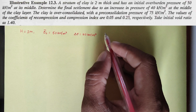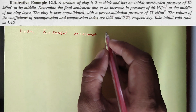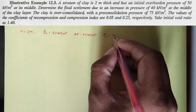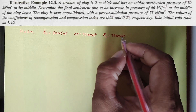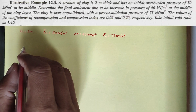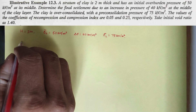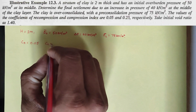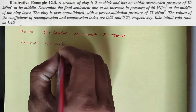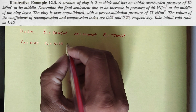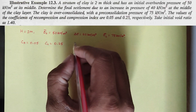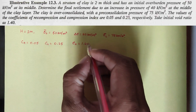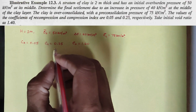The clay is over-consolidated with a pre-consolidation pressure σc equal to 75 kN/m². The coefficient of recompression Cr is given as 0.05, and the compression index Cc is given as 0.25. The initial void ratio e₀ is equal to 1.40.